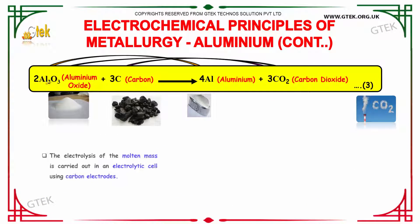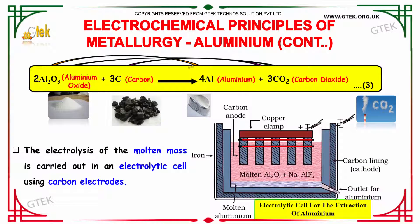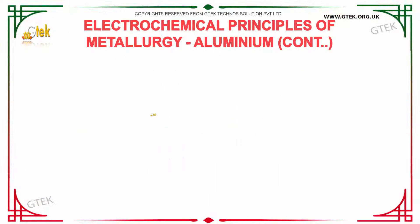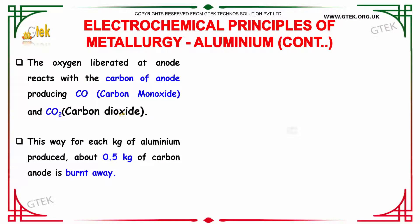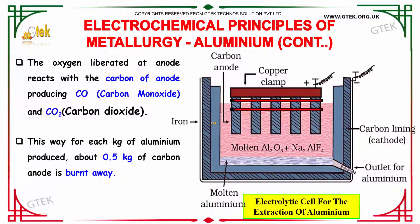Aluminium oxide mixed with carbon gives aluminium and carbon dioxide. The electrolysis of the molten mass is carried out in an electrolytic cell using carbon electrodes. The oxygen liberated at the anode reacts with the carbon of the anode, producing carbon monoxide and carbon dioxide.